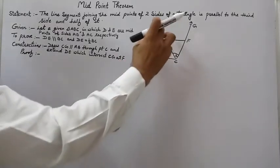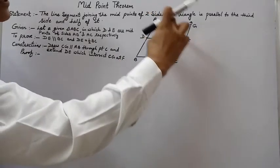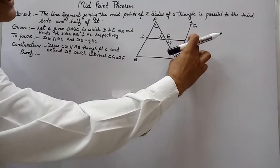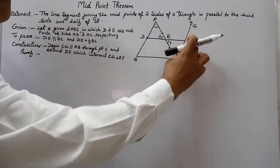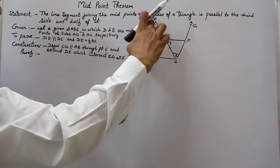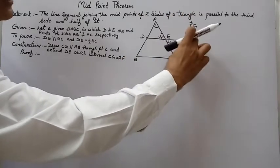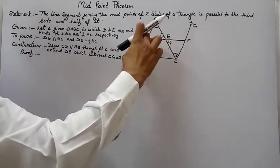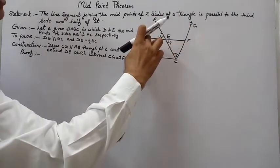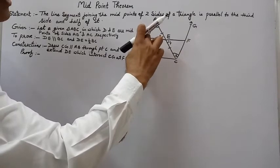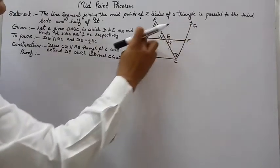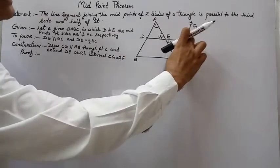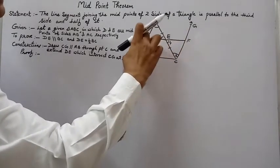By angle-side-angle, these two triangles are congruent. Therefore AD is equal to CF by CPCT — corresponding parts of congruent triangles are equal. AD is equal to DB because D is the midpoint of AB, so DB is also equal to CF. Since DB equals CF and they are already parallel by construction, BCFD is a parallelogram because one pair of opposite sides is equal and parallel.